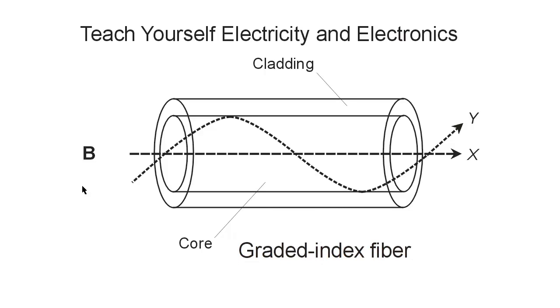In the graded index fiber, the core has a higher index of refraction near the center and gradually reducing the index of refraction as you go out towards the outer edges or the outer boundary of this cylindrical fiber. So what tends to happen is that,